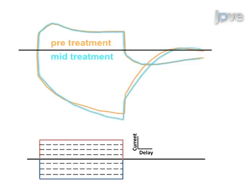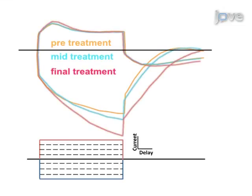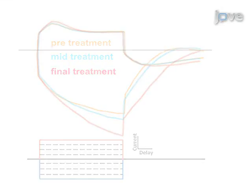Results show longitudinal changes in sensory axonal excitability with chemotherapy treatment, providing a method to detect these changes earlier than conventional techniques. The main advantage of this technique over conventional nerve conduction studies is that it provides information about the intrinsic function of the axonal membrane, including constituent conductances, rather than simply amplitude and conduction velocity.